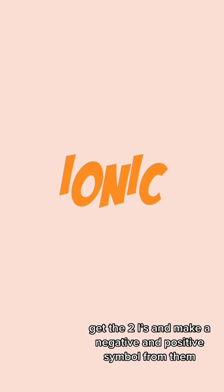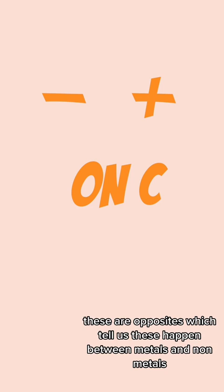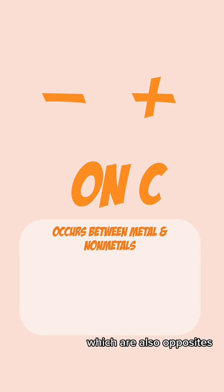For ionic bonding, get the two I's and make a negative and positive symbol from them. These are opposites which tell us these happen between metals and non-metals which are also opposites.